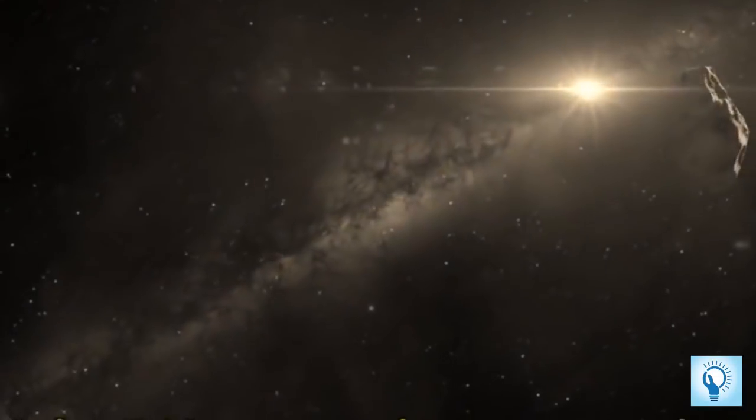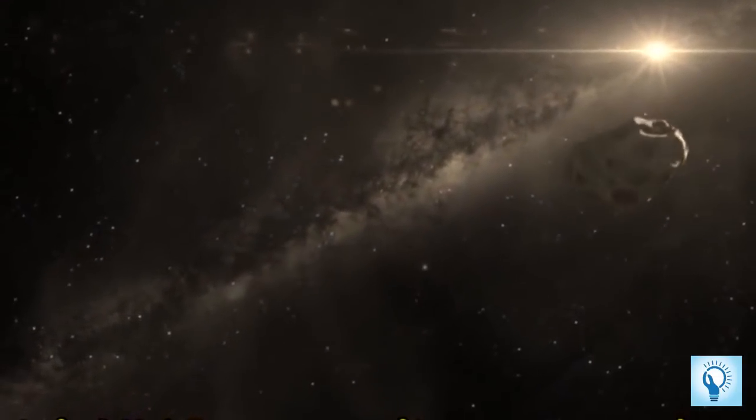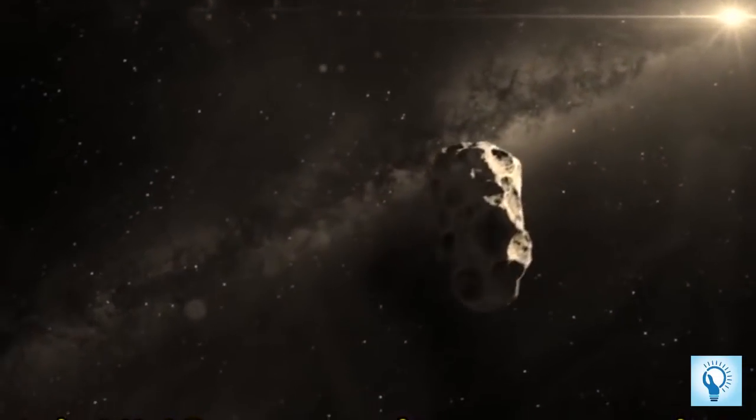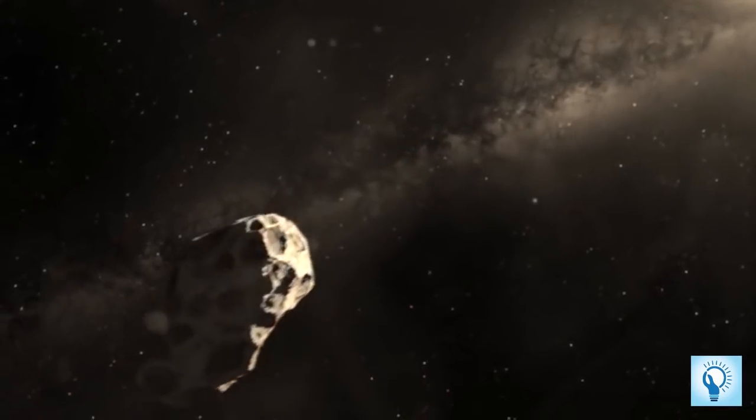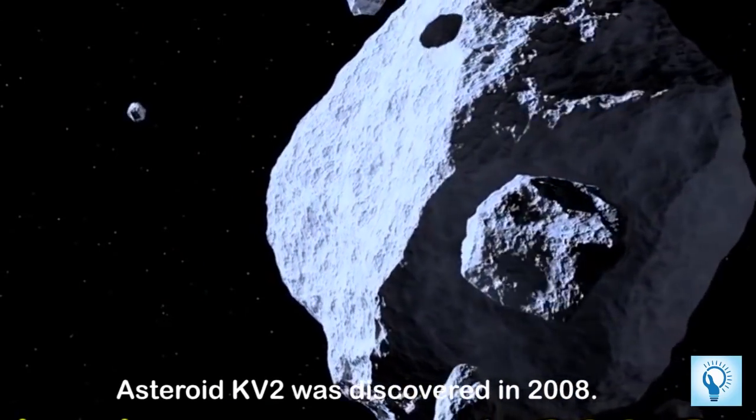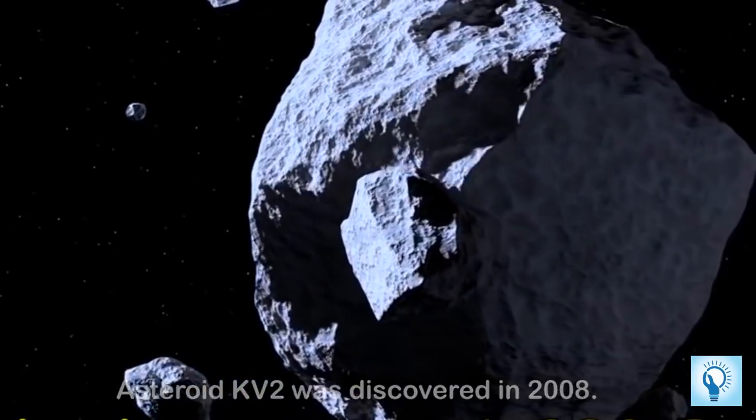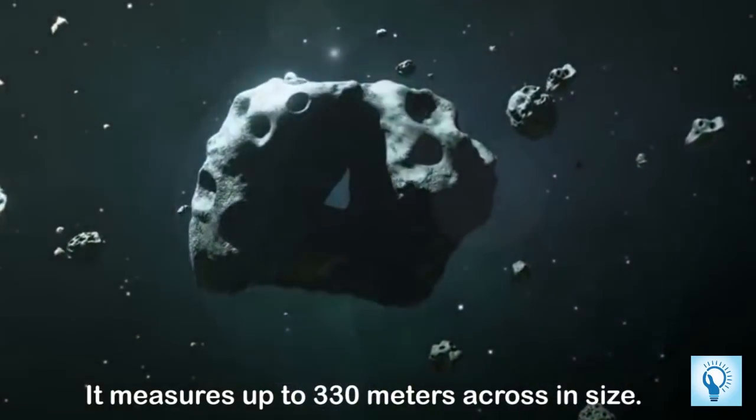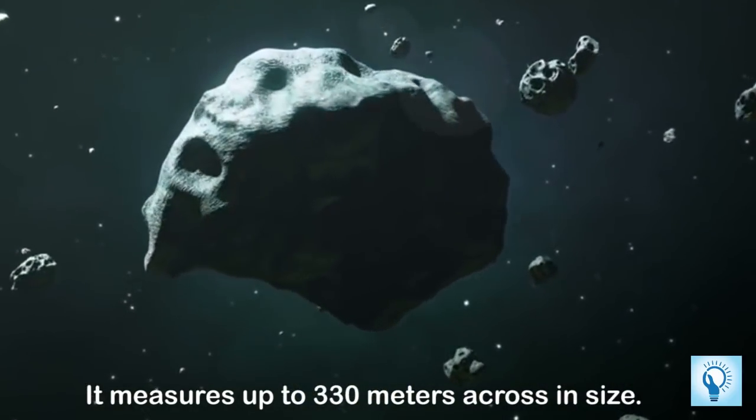The asteroid which is expected to whiz past the earth today is known as KV2 and it was discovered in 2008 and measures up to 330 meters across its size.